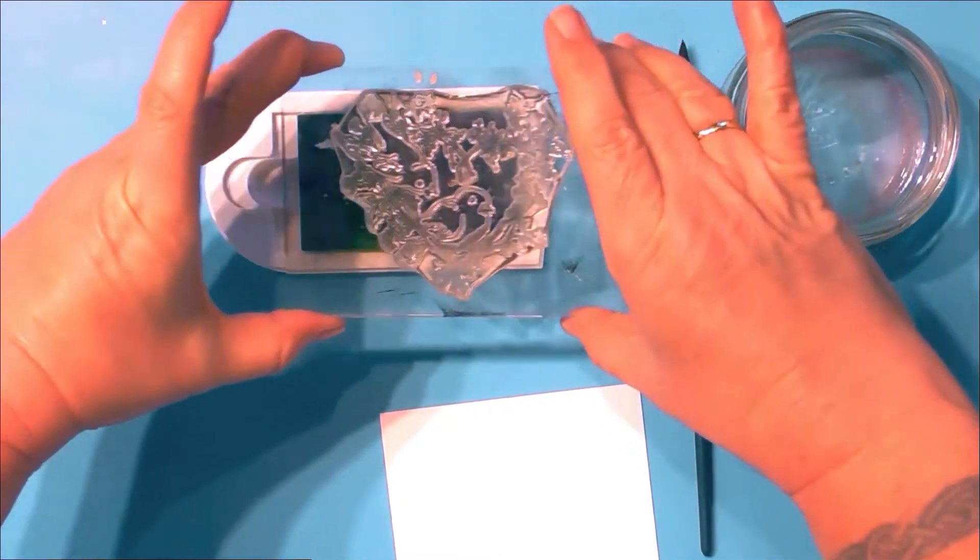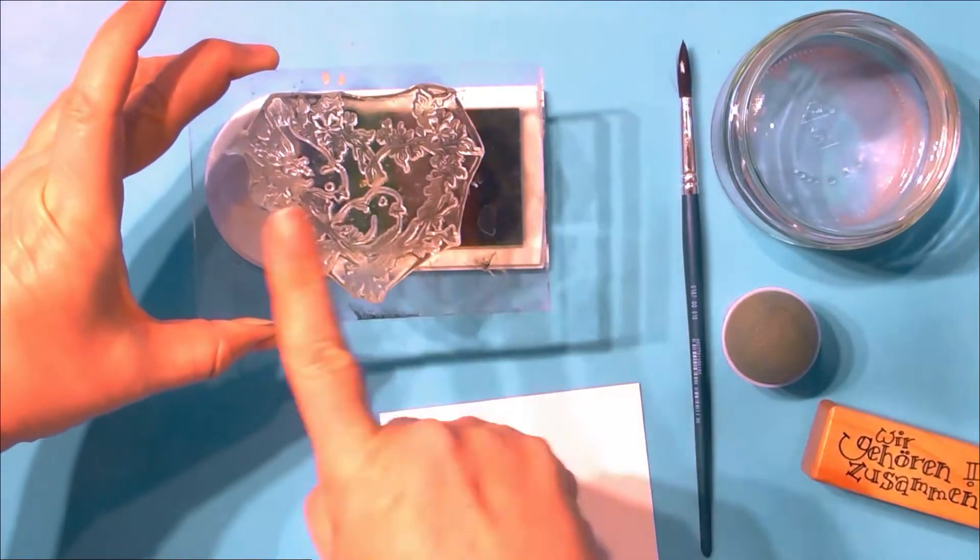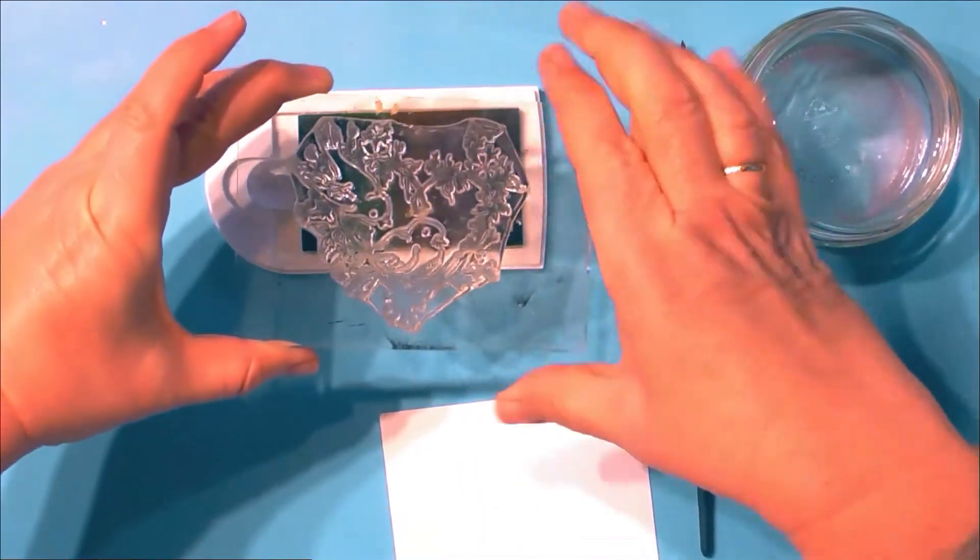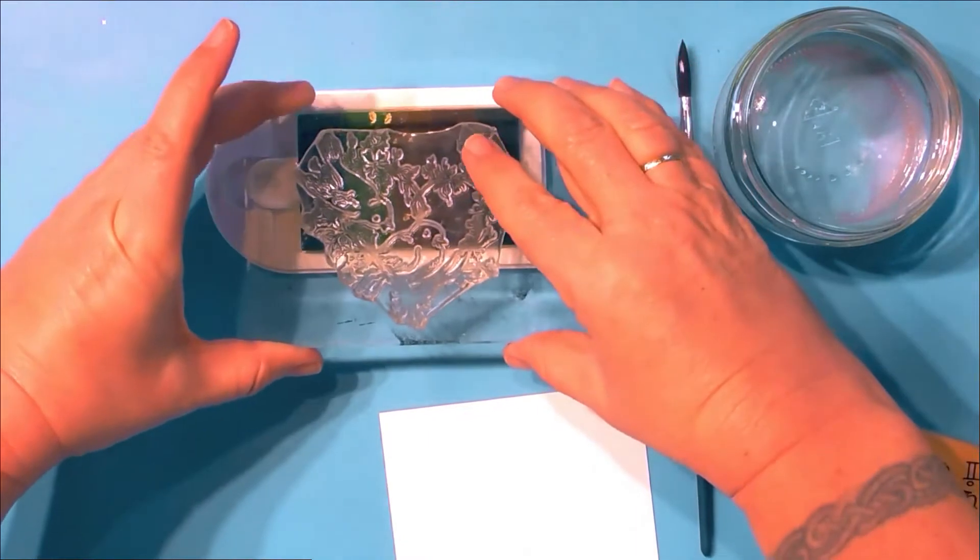Now ink your stamp, but never in a horizontal way because then you will smudge your ink pad. Always use a vertical movement to ink your stamp.